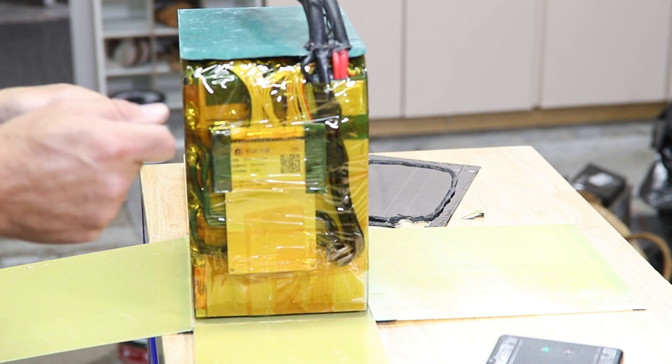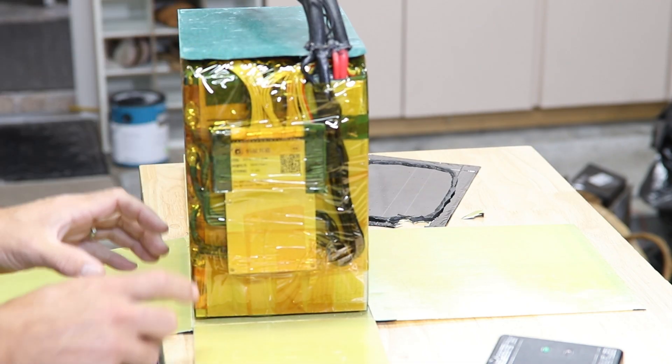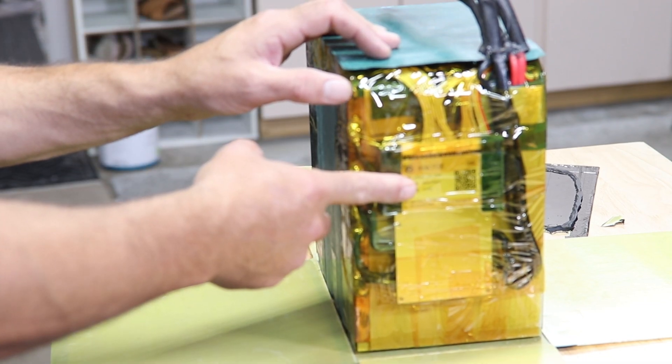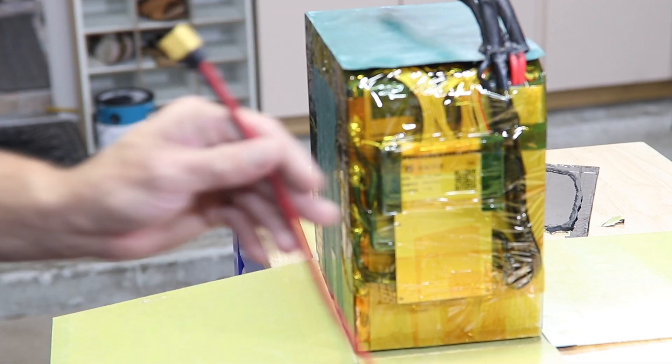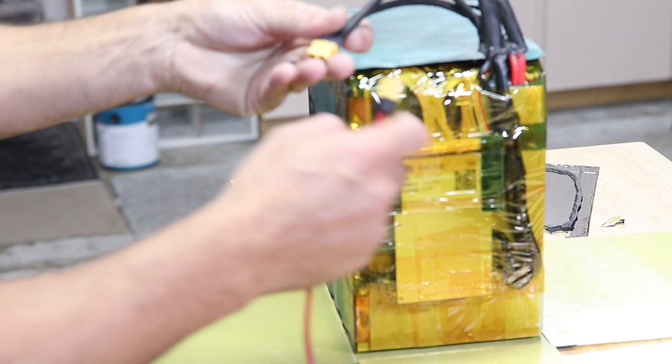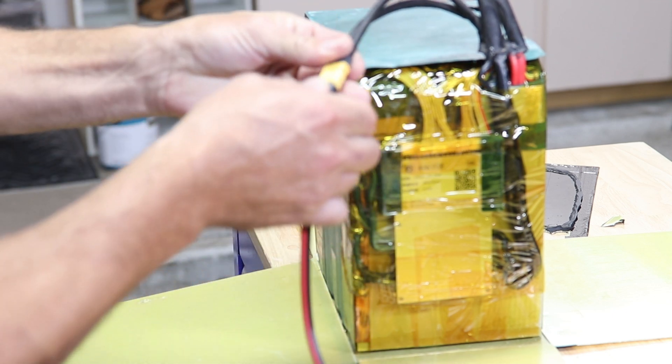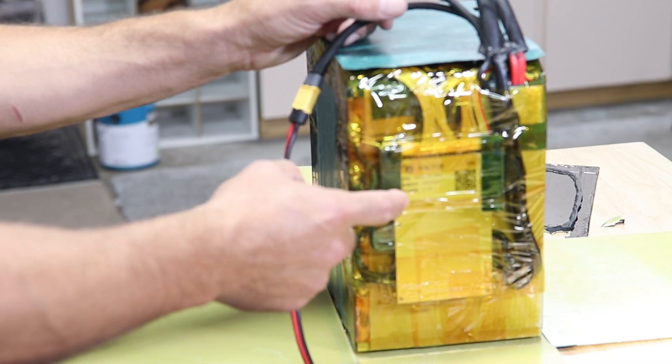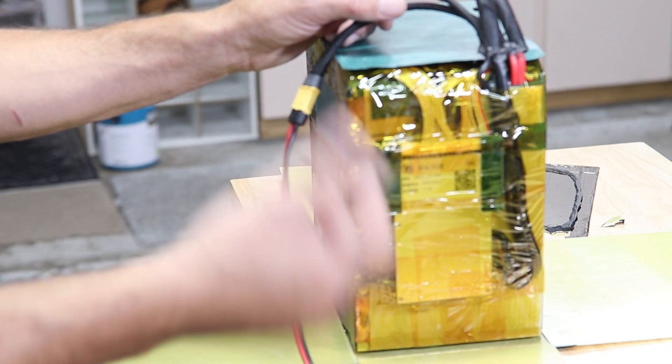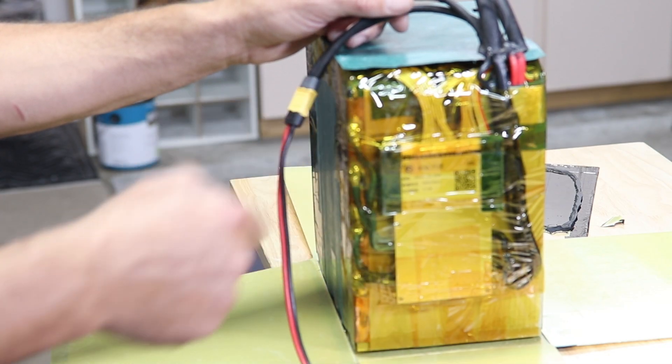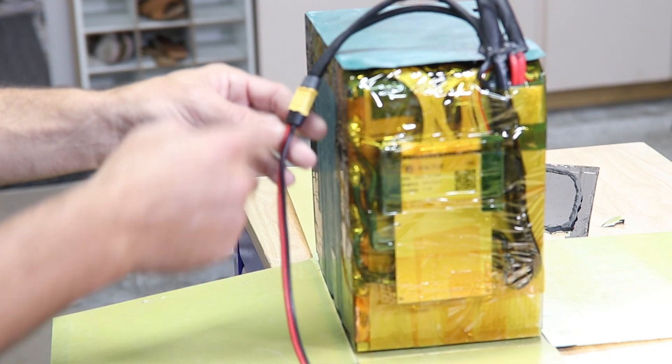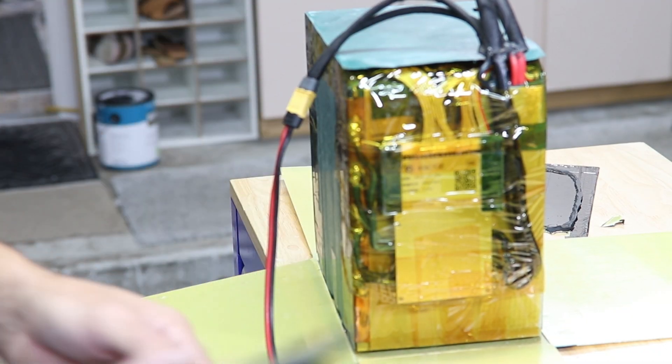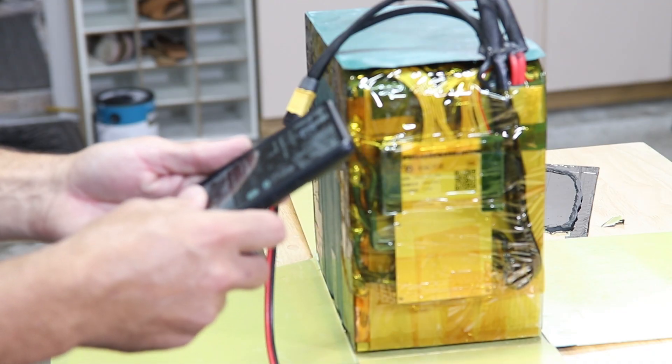While we're here, let's talk about accessing the BMS via Bluetooth. You are going to connect your charger up that is going to activate the Bluetooth because most of the time when the BMS is in protection you can't access the Bluetooth via your app. So you have to plug it in, you're going to get a beep and now we should be able to access it on our phone.